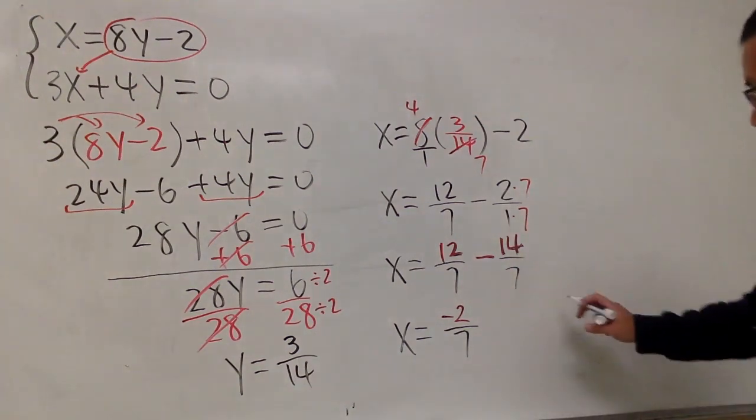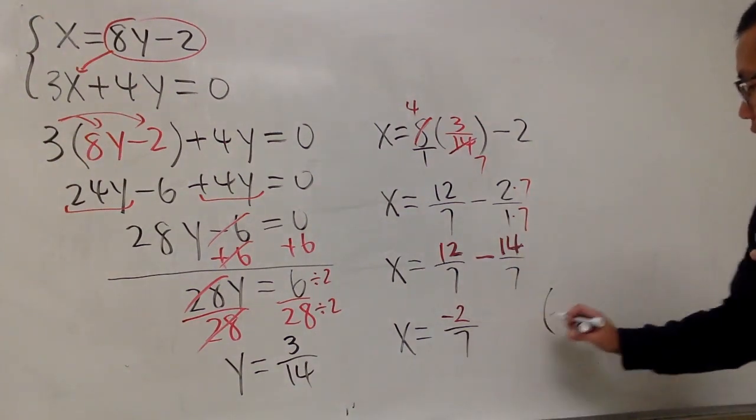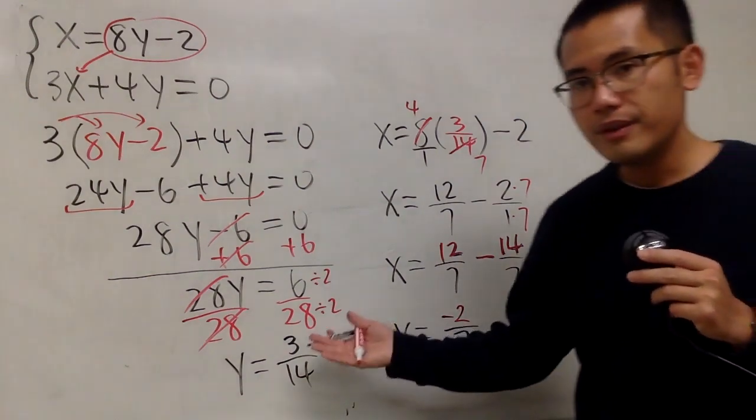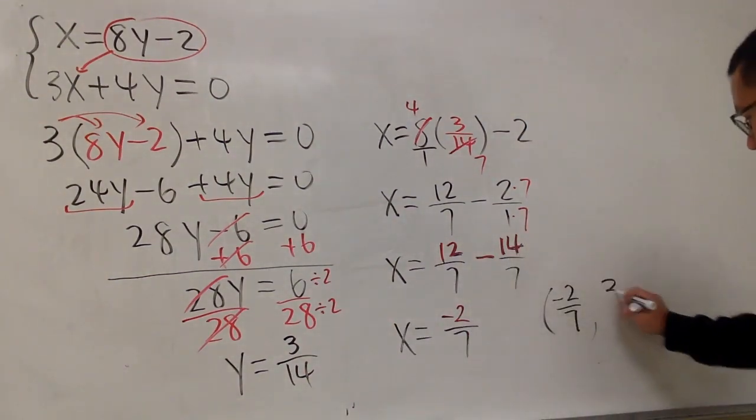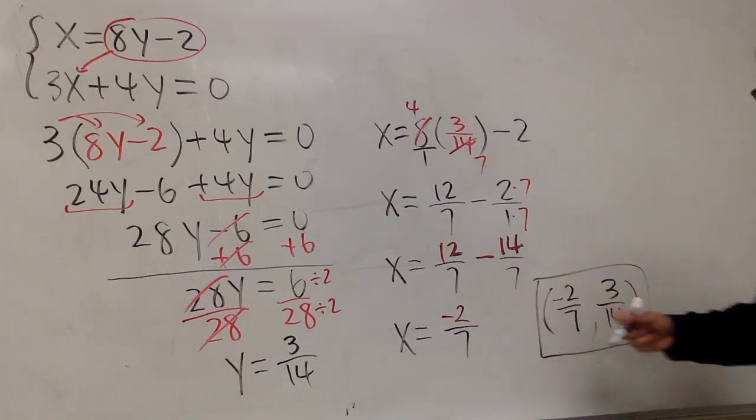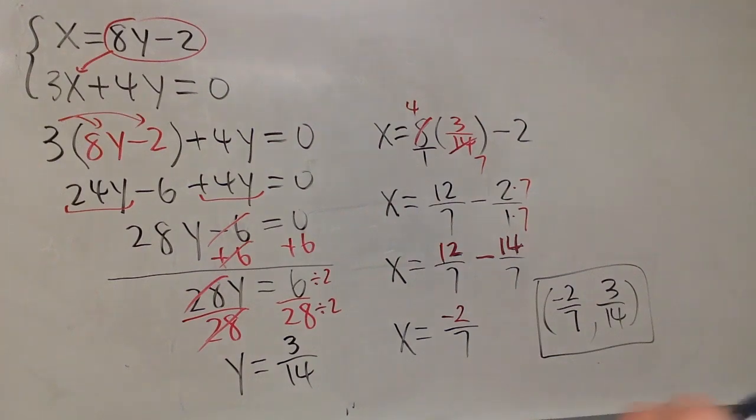So, that's what we have. Finally, I'll write down the answer right here for you guys. x is negative 2 over 7. Meanwhile, the y is 3 over 14. And this right here is it. Thank you.